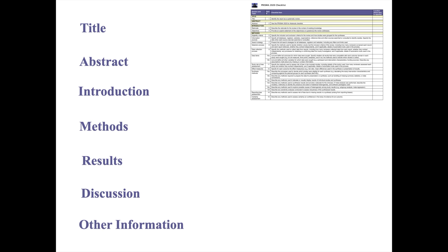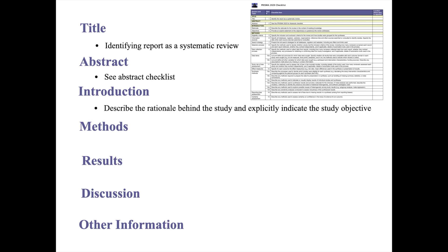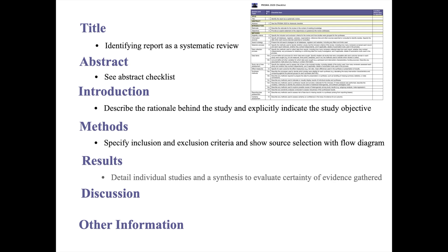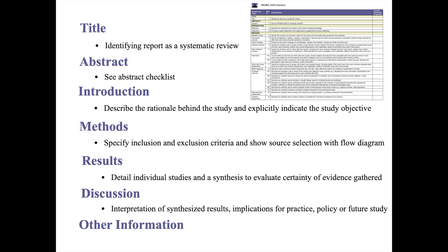Examples of some of the items that can fall under these sections include: identifying the report as a systematic review; checking further checklists such as the abstract checklist; describing the rationale behind the study and explicitly indicating the study's objectives; specifying inclusion and exclusion criteria and showing source selection with the flow diagram; detailing individual studies and the synthesis of these studies to evaluate the certainty of the evidence gathered; interpreting the synthesis of these results and their implication for practice, policy, or future research; and further information on the registration, protocol, funding, and conflicts of interest.